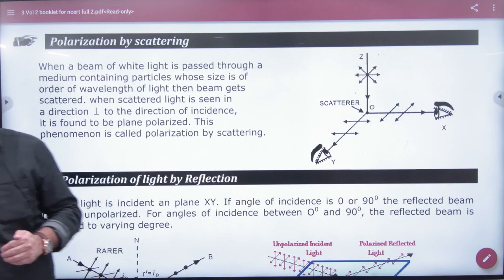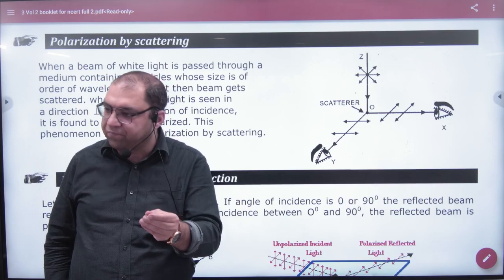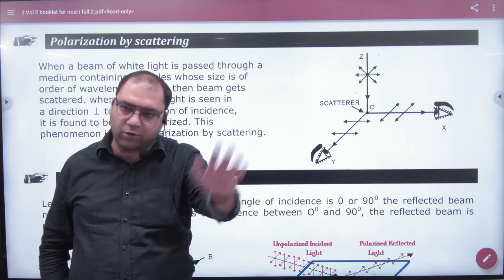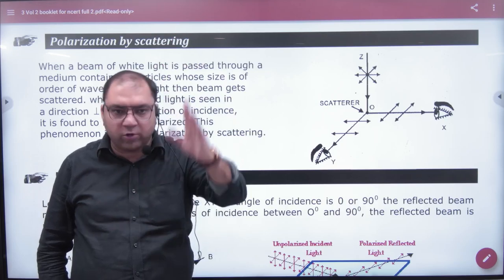When light turns out, the size of the particle is almost the same, so light scatters. So if you think light is coming up and it turns out, it turns out on each side.